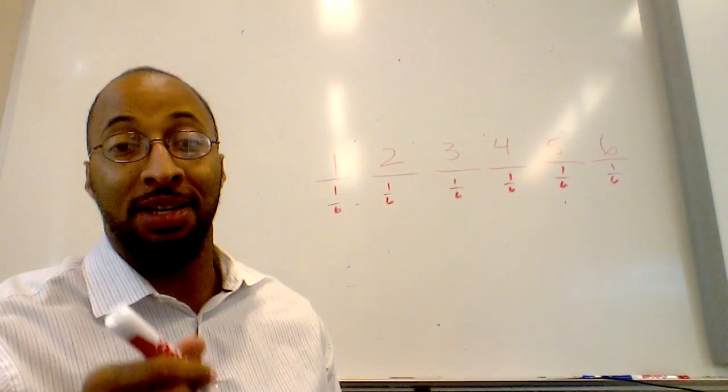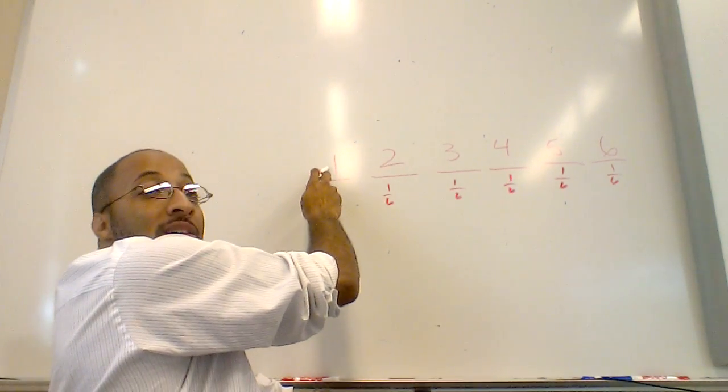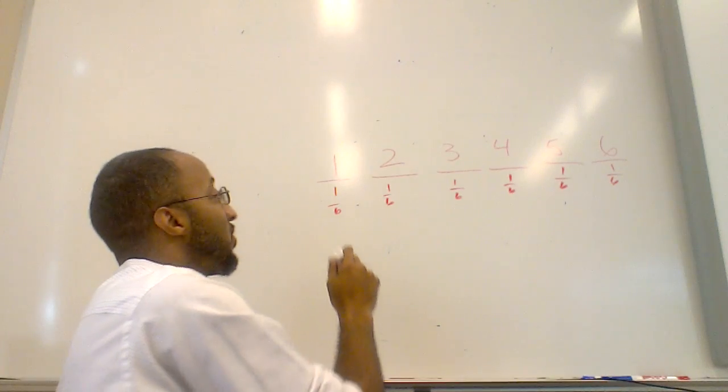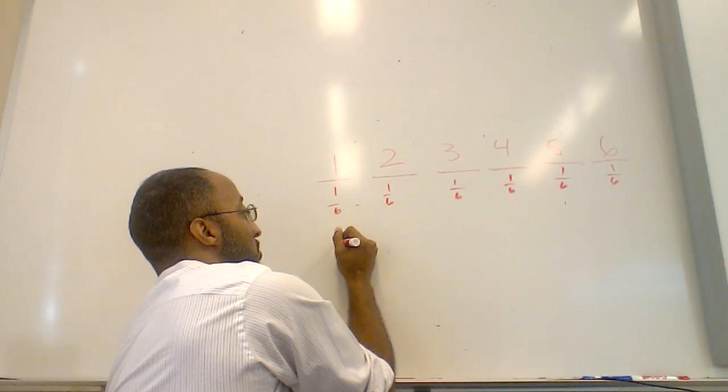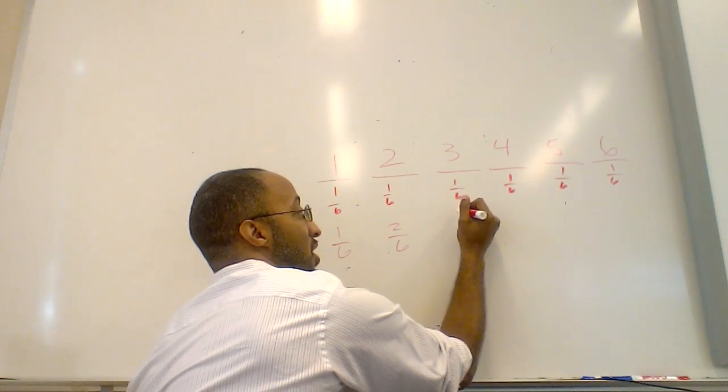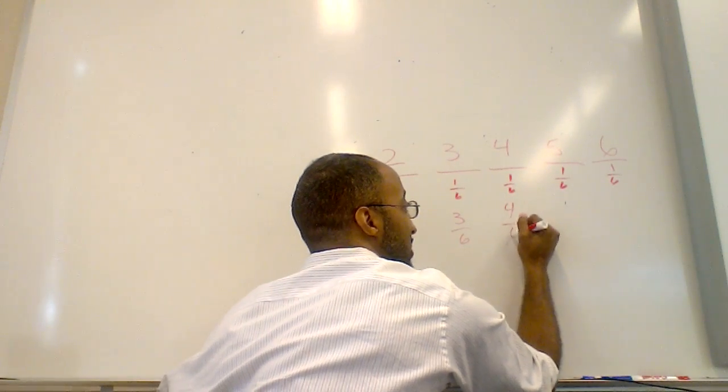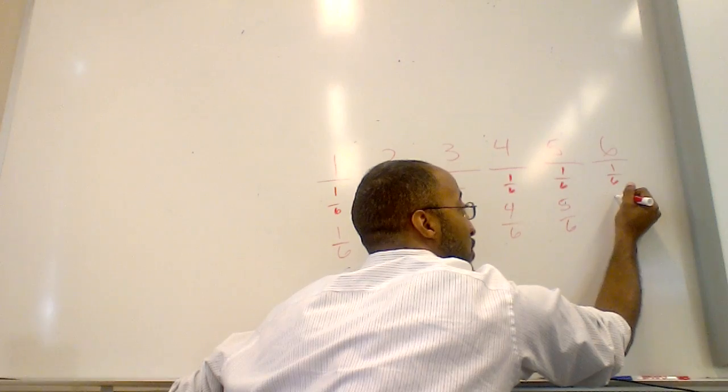So the way we define the expected value is we multiply this probability times the occurrence. So in this case, we're going to have one-sixth, two-sixths, three-sixths, four-sixths, five-sixths, and one.